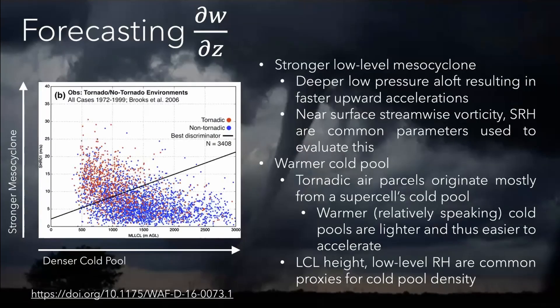Tornadoes are probably no coincidence as the result of this stretching process. Going into a little more detail about dW/dZ — how do you go about forecasting this? There are two main factors that really influence this vertical velocity gradient. The first one is the strength of your low-level mesocyclone — in other words, how much spin you have right at the cloud base of the storm. Stronger rotation gives you stronger low pressure, and that low pressure and the resulting acceleration up towards it can really ramp up dW/dZ. So we look for near-surface streamwise vorticity and storm-relative helicity — common parameters used to evaluate potential mesocyclone strength.